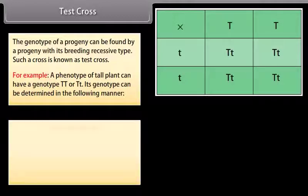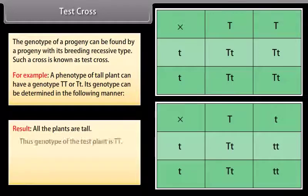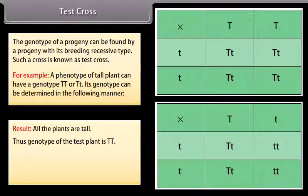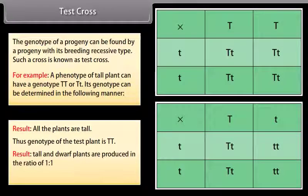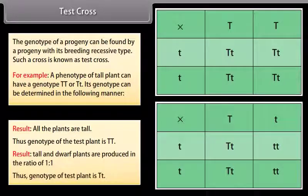In the first case, all the plants are tall. Thus the genotype of the test plant is T.T. In the second case, tall and dwarf plants are produced in the ratio of 1 is to 1. Thus genotype of test plant is T.t.